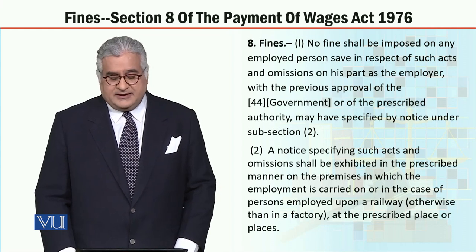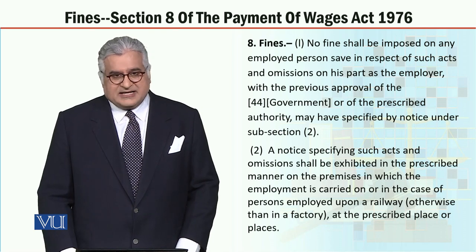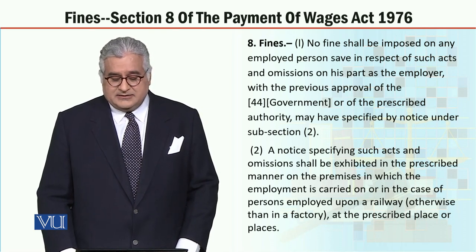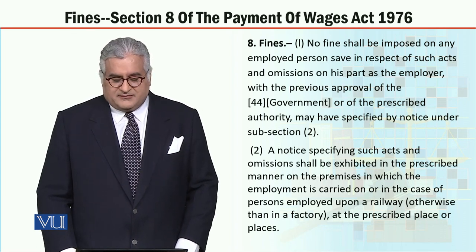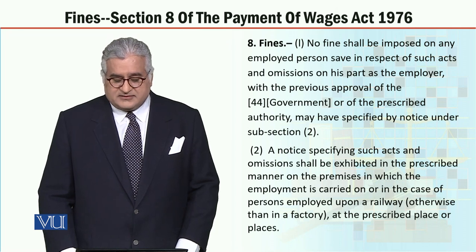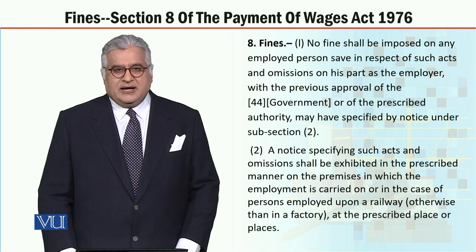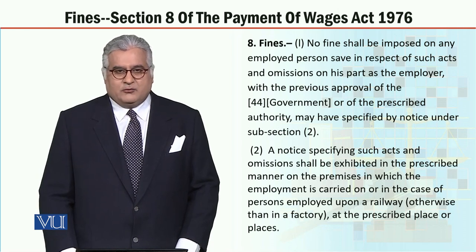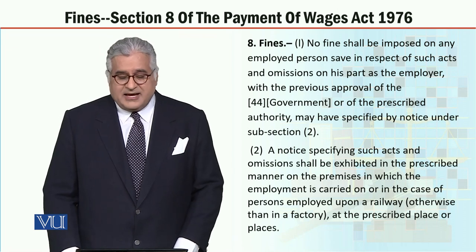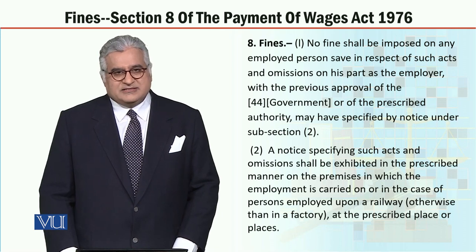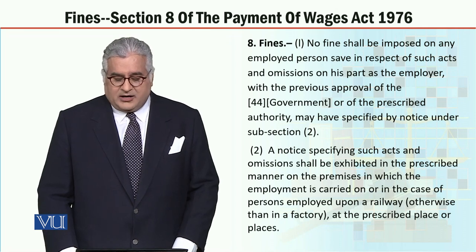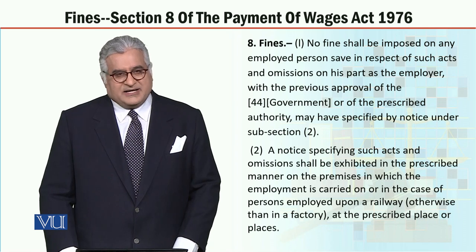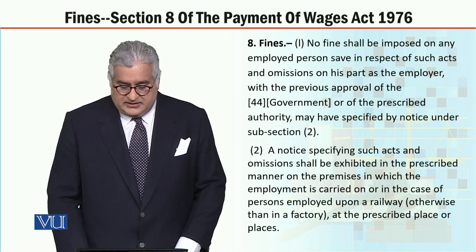Subsection 2 kehta hai: A notice specifying such acts and omissions shall be exhibited in the prescribed manner on the premises in which the employment is carried on, or in the case of persons employed upon a railway, otherwise than in a factory, at the prescribed place or places. Yani notice jo acts aur omissions ke mutalliq hai, woh prescribed manner mein premises par exhibit hona chahiye jahan employment carry on ho rahi hai, aur agar railway se related hai to prescribed government-mentioned place par.